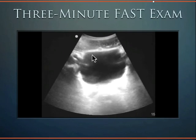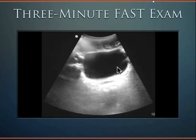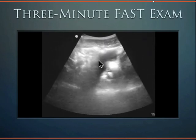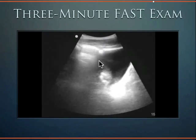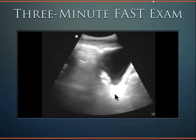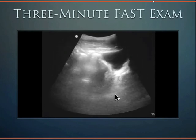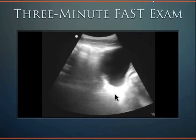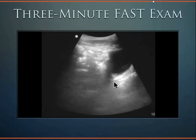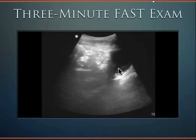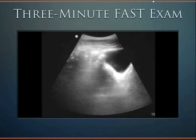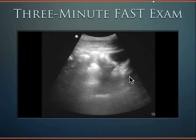Here we are fanning all the way through the bladder in a transverse view. Notice the bladder is a low attenuating structure, so structures posterior to it appear hyperechoic. Then, in the sagittal view, fan superior and inferior to obtain the entire window. The bladder is more triangular shaped in that sagittal view.